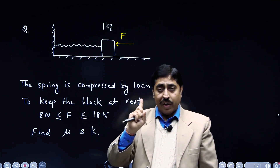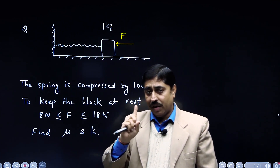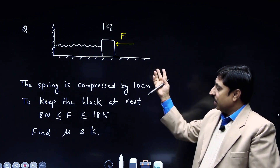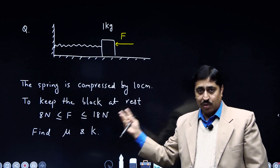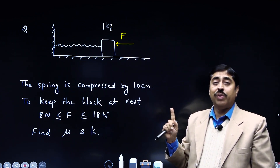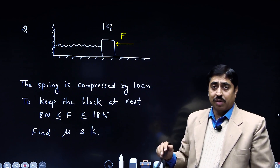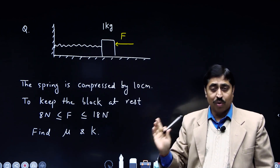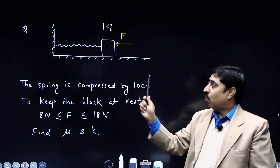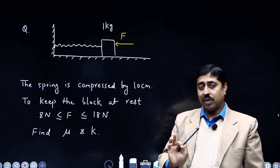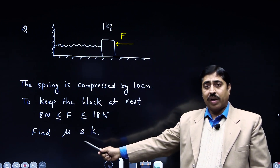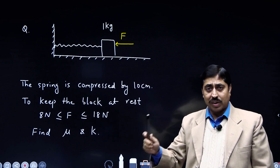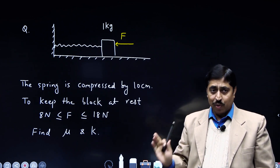Mind you, this spring is compressed by 10 centimeter. Given this situation, what will be the coefficient of friction between the block and the floor surface, and what is the force constant of the spring? We have to find the values of K and mu.